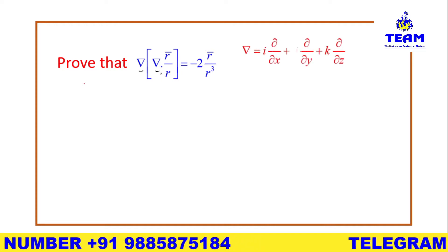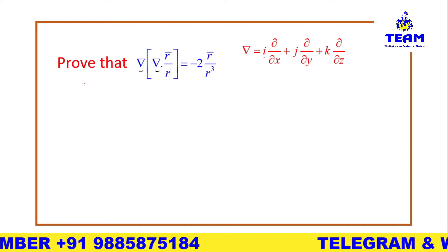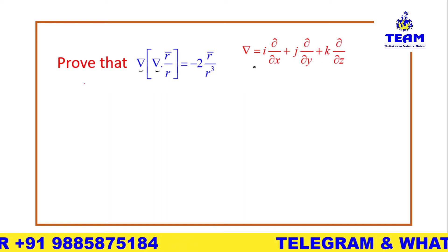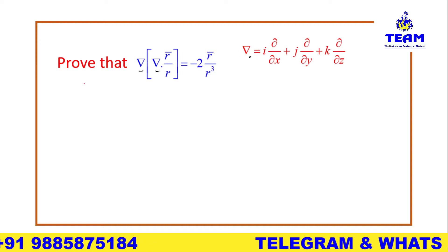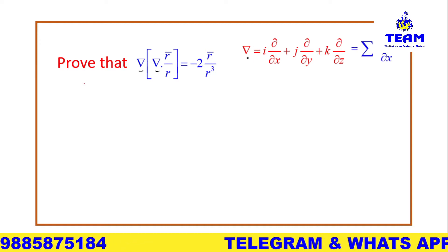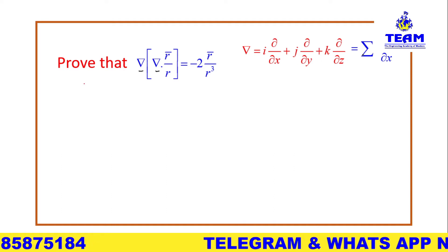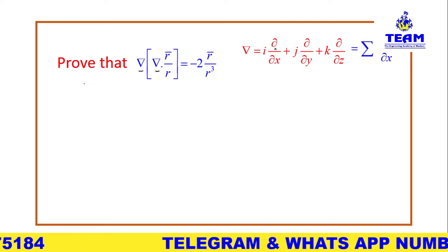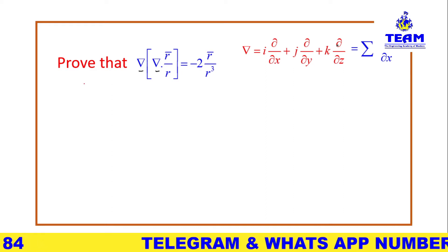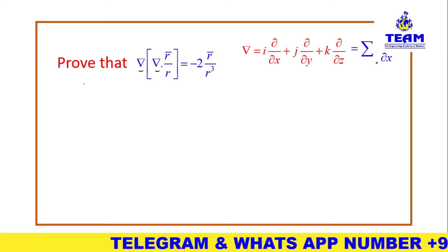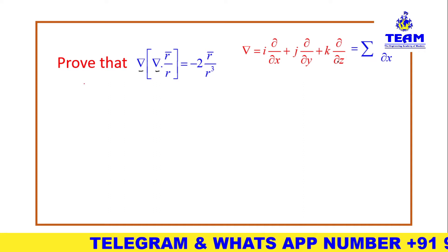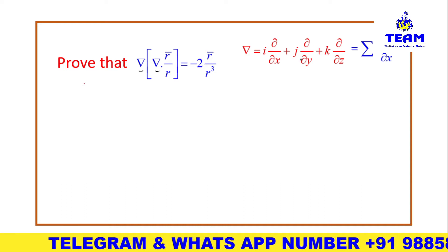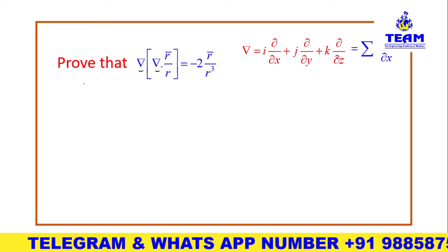Del is nothing but the vector differential operator. Del is equal to i·∂/∂x + j·∂/∂y + k·∂/∂z. So you can say del is a vector. This can also be written as summation i·∂/∂x. In three-dimensional space you get all three terms; in two-dimensional space only the i and j terms occur.